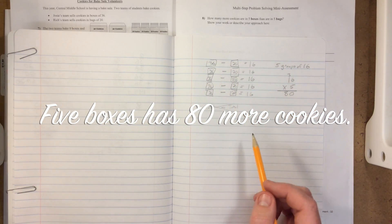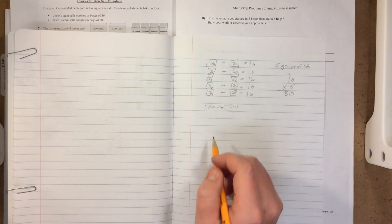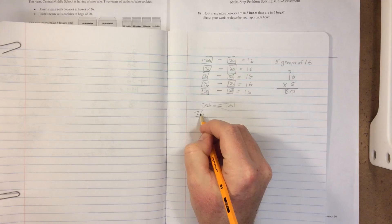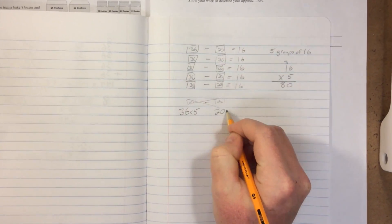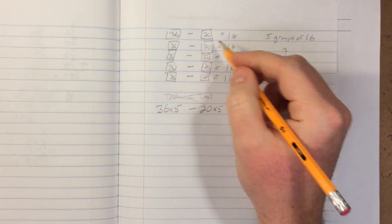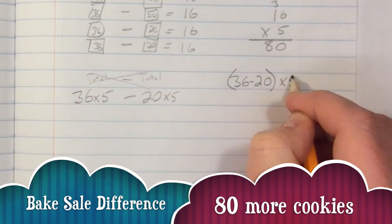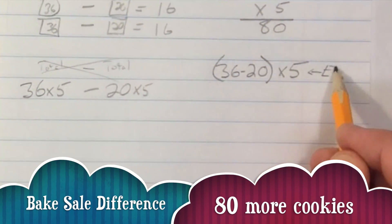That's the solution. We found it more directly. So we could have went the long way, did 36 times 5, and then do 20 times 5 and subtract those two. But what we did is we subtracted first, got that difference, and then multiplied by 5. And that gives us 80, and that's much, much easier.